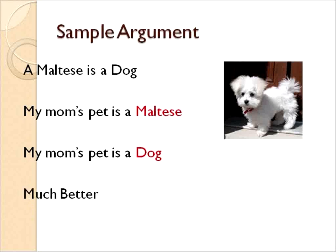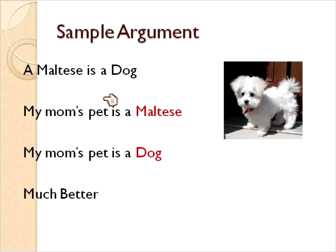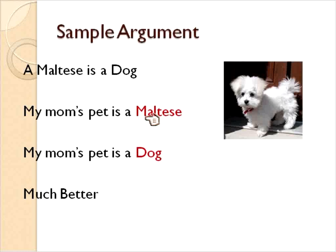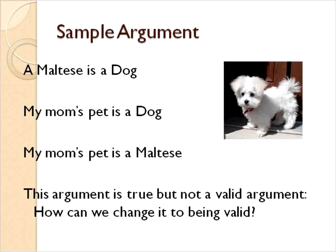How could we make this a valid argument? We just need to change the order. We could say: a Maltese is a dog, my mom's pet is a Maltese, therefore my mom's pet is a dog. It would be even better if it said all Maltese are dogs. This is a much more valid argument — a Maltese is a dog, my mom's pet is a Maltese, therefore my mom's pet is a dog. That makes a lot more sense and the argument is a lot more valid.